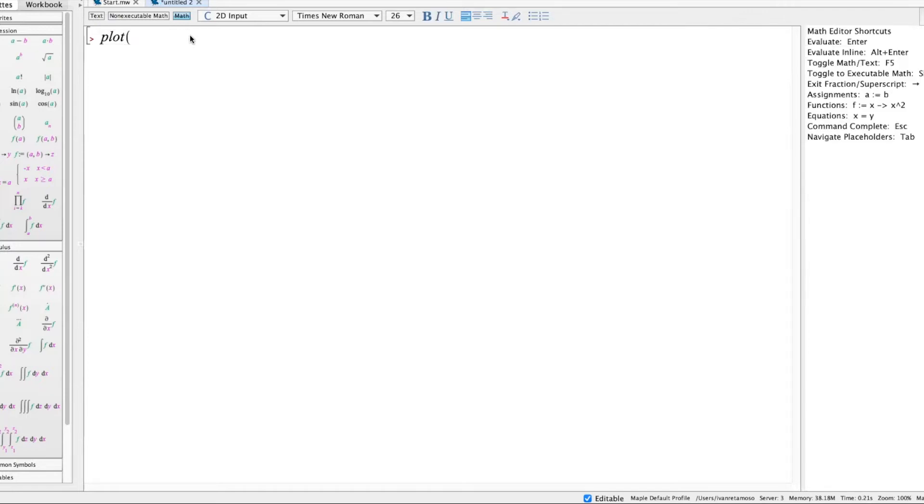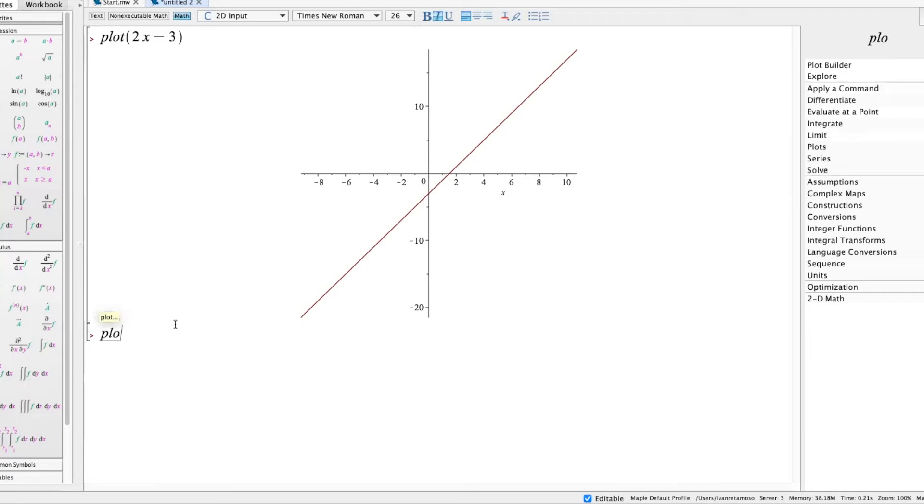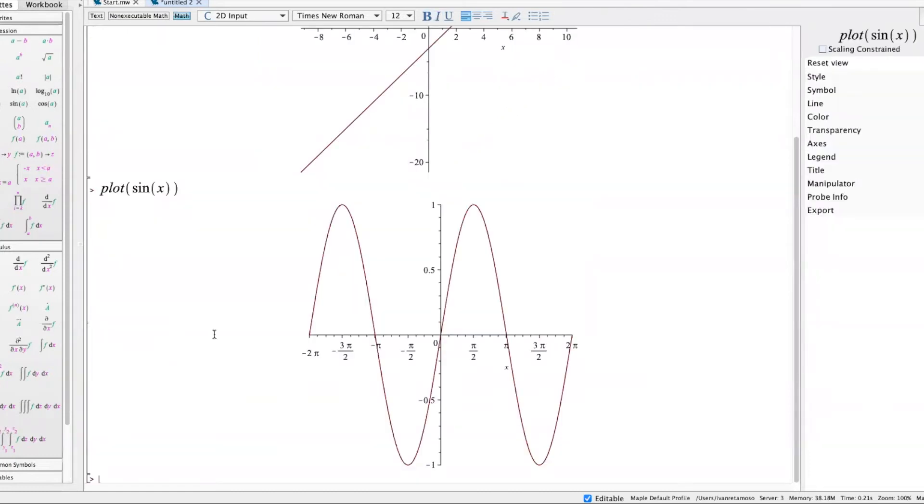So just for instance, this function 2x minus 3 graphs a line. Then we can try, for example, graphing sine of x. Here it is.